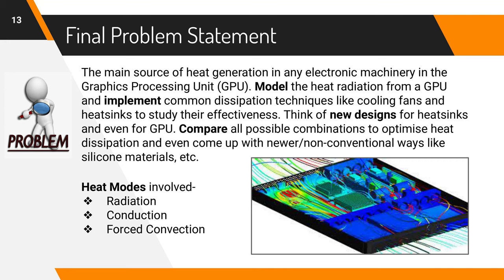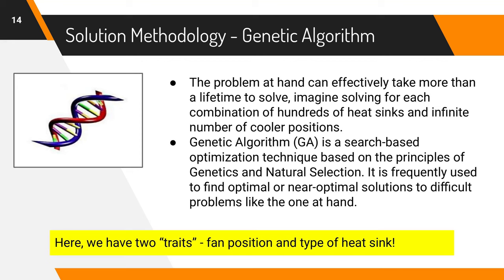This problem essentially involves all three modes of heat transfer, the radiation, conduction and convection. Now, solving this problem can effectively take a lifetime given the variety of available fins and infinite number of fan speeds and configurations. So, we implemented something known as the genetic algorithm of optimization. It is based on the ideas of natural selection like survival of the fittest and genetics. Basically, it is a search based algorithm that brings down solving the problem to solving just a few cases so that we can arrive at the optimal solution. In our project, we are solving only five sub cases and one validation case to arrive at the best design with a high degree of accuracy.